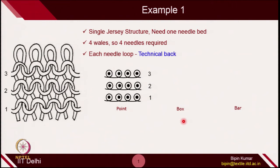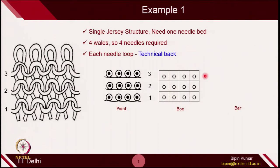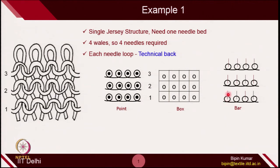In the box diagram, technical back side is represented by 0 or O in each box - so 4 columns with O in each box for all 3 courses. In the bar diagram, all needles are represented by bars, and since it is technical back, you represent each needle accordingly by a bar. Whether you use point or bar diagrams, they look almost similar. Some researchers prefer the point diagram, others prefer bar; both represent the same nature of the fabric.